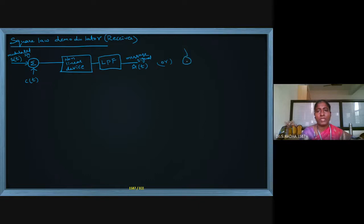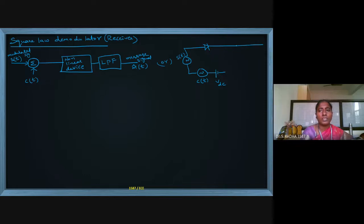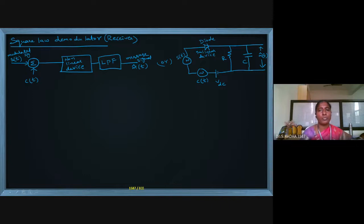We can also draw the diagram as: we give s(t), then a carrier, and for the operating point of the diode we take a DC voltage. The nonlinear device is a diode. The low pass filter uses a capacitor across which the output is taken. R and C are in parallel; the diode is the nonlinear device, and V_dc is for the proper operating point of the diode. This forms the square law demodulator.